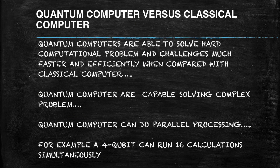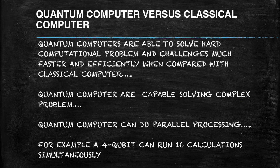In a comparative study between quantum computing and classical computing, quantum computers are able to solve hard computational problems much faster and more efficiently. Quantum computers can do parallel processing — many processes can execute simultaneously. For example, a 4-qubit quantum computing processor can run 16 calculations simultaneously. That shows the power of a quantum computer, and that is the future of computing.